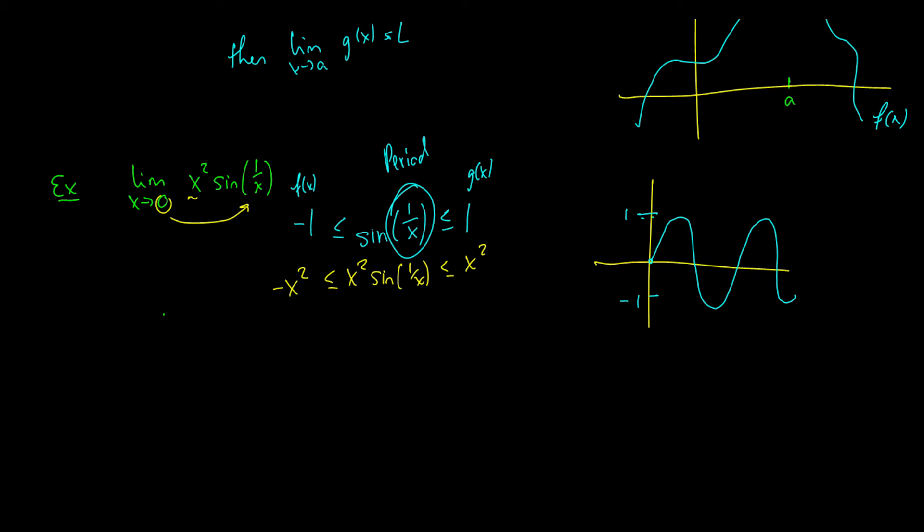Now, let's take the limit. Well, the limit as x goes to 0 of negative x squared is equal to 0, and the limit as x goes to 0 of x squared is equal to 0, and because f(x) and h(x) equals 0, our middle function must also equal 0. So, we can say, therefore, the limit as x goes to 0 of x squared times sine of 1 over x is therefore equal to 0, because we've squeezed this function in between these two functions.